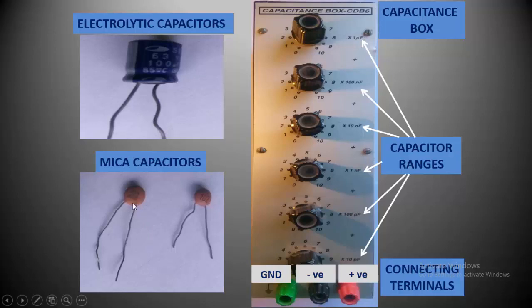Now let us understand how to use the capacitance boxes, i.e. variable capacitances in our circuitries. In this, you will see there are black knobs; in the neighborhood of each knob, there are ranges and there are 3 terminals.